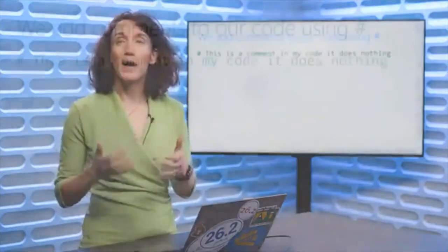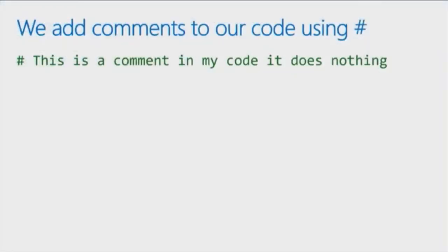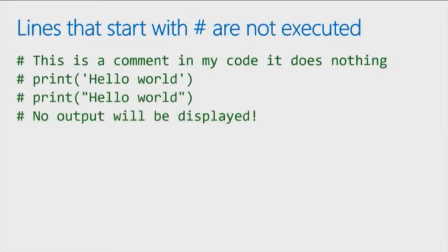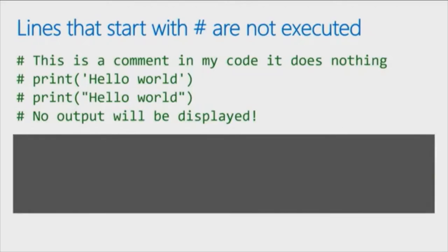Before you get too far into coding, it's useful to get in the habit right away of using comments. Comments are a way of documenting your code. By adding a hashtag or a pound symbol at the beginning of a line of code, that turns your line into a comment — which means when the code runs, it does absolutely nothing. It's there for you as a programmer to remember what your code does, or for someone else reading your code to understand it. You can put comments in front of code you're experimenting with. Maybe a line isn't working — rather than deleting it, you can comment it out, then try again with a difference. That way you don't lose the old code.